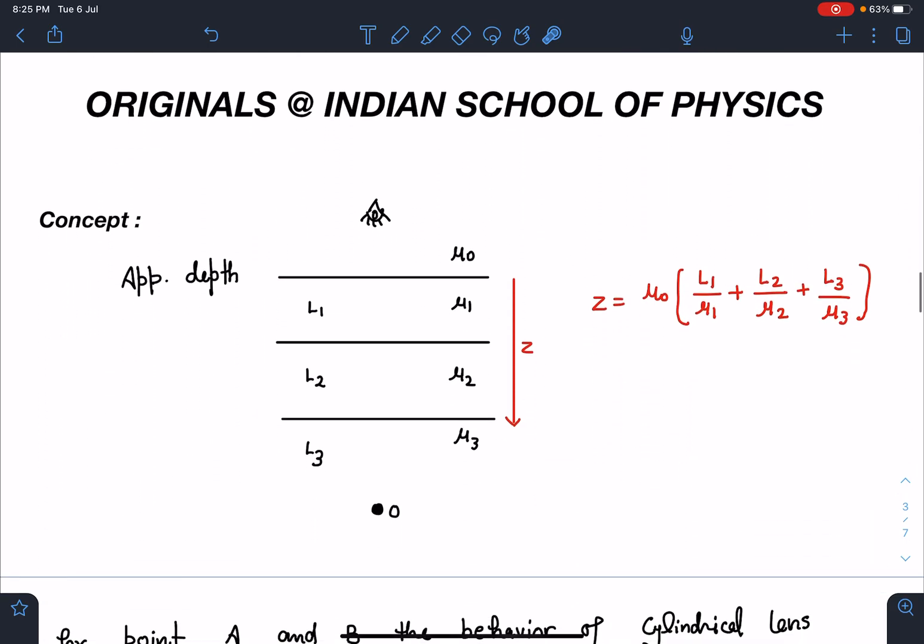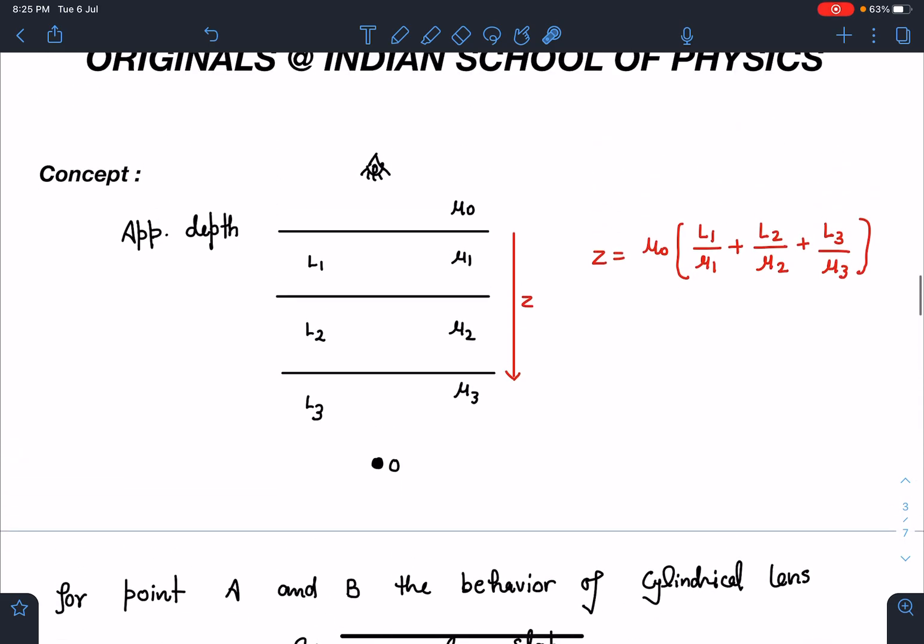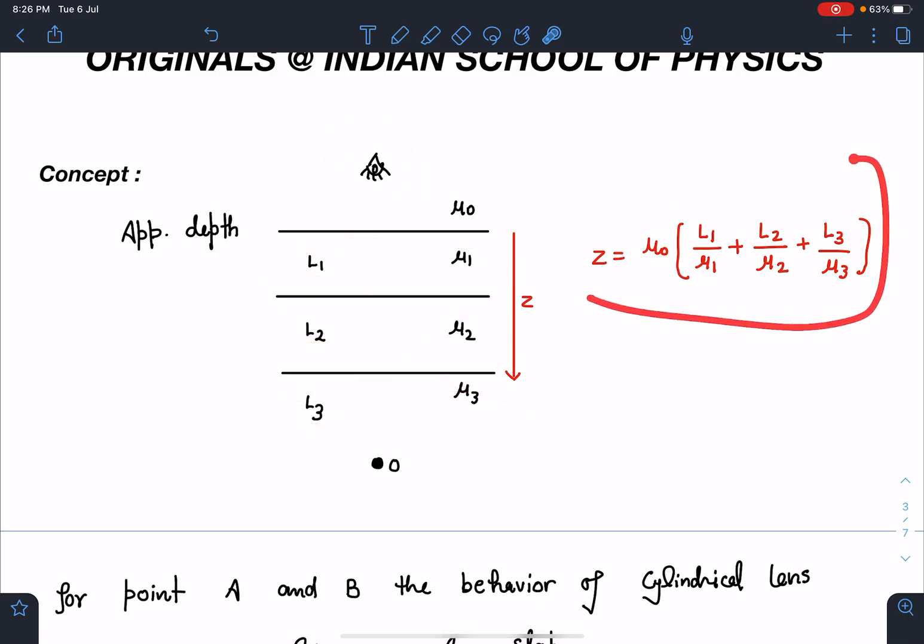By the way, this is the original problem. Concept-wise, you must remember this apparent depth formula, and this is for near normal cases. So one object is there and one observer is there. Its image will appear to the observer at a distance of z from the interface in which the observer is present. From this interface, this z is measured. So it is like medium in which observer is placed, and then l1 by mu1, l2 by mu2, l3 by mu3, keep doing it, you will be getting apparent depth. So you can use this formula.